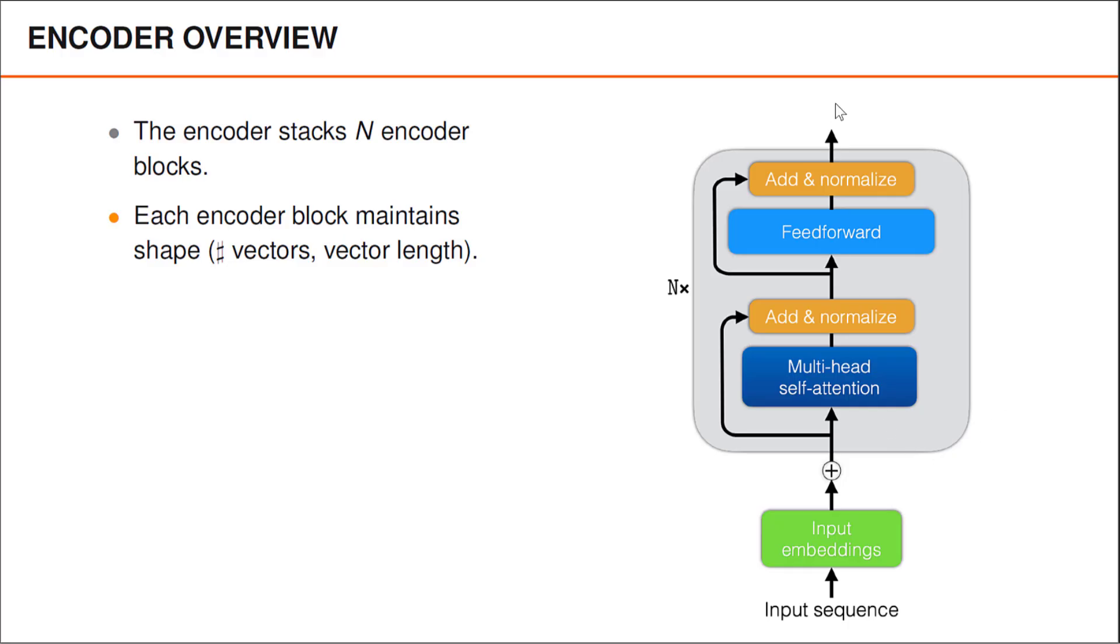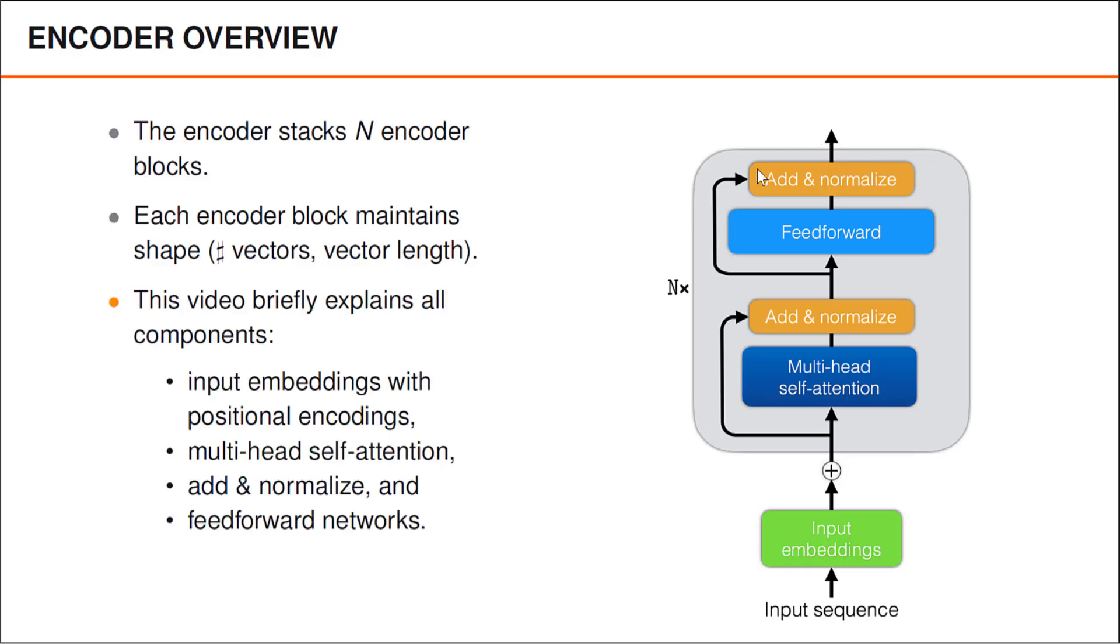As you can see, when data enters an encoder block, it goes through a multi-head attention layer. It also goes through a residual connection, and those terms are then added and normalized. After that, there is a simple feedforward network, around which there is also a residual or skip connection. Finally, we add and normalize again.